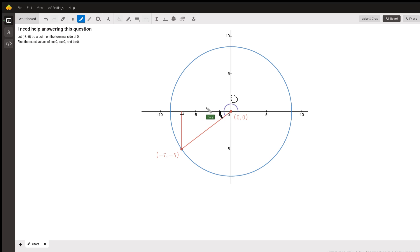If we label the size of this triangle, paying attention to the signs, this segment has a length of negative seven, this vertical segment a length of negative five.